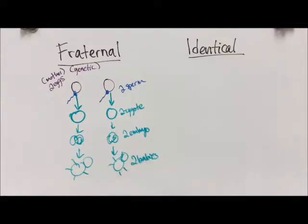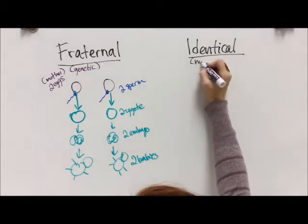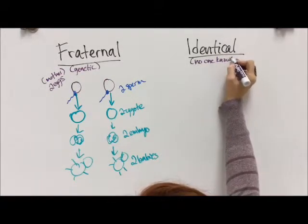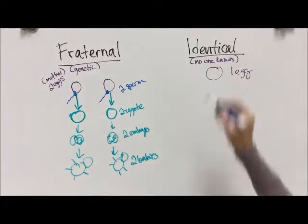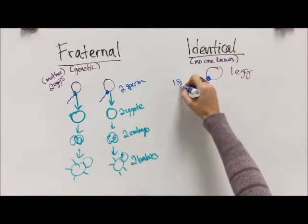They develop into two completely different babies. They're just like siblings. They have two sperm, two eggs, but occupy the same womb at the same time. Now with identical twins, nobody really knows how this happens.